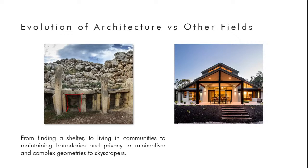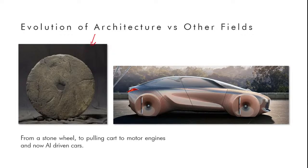After the industrial revolution, the construction industry skyrocketed. But is architecture keeping up the pace with other fields? Take the automobile industry as an example. We began with a stone wheel, which was tied to a cart pulled by humans, then by oxen, then horses — and eventually a motor engine was developed, giving us the modern car. But did the evolution of automobiles stop there?